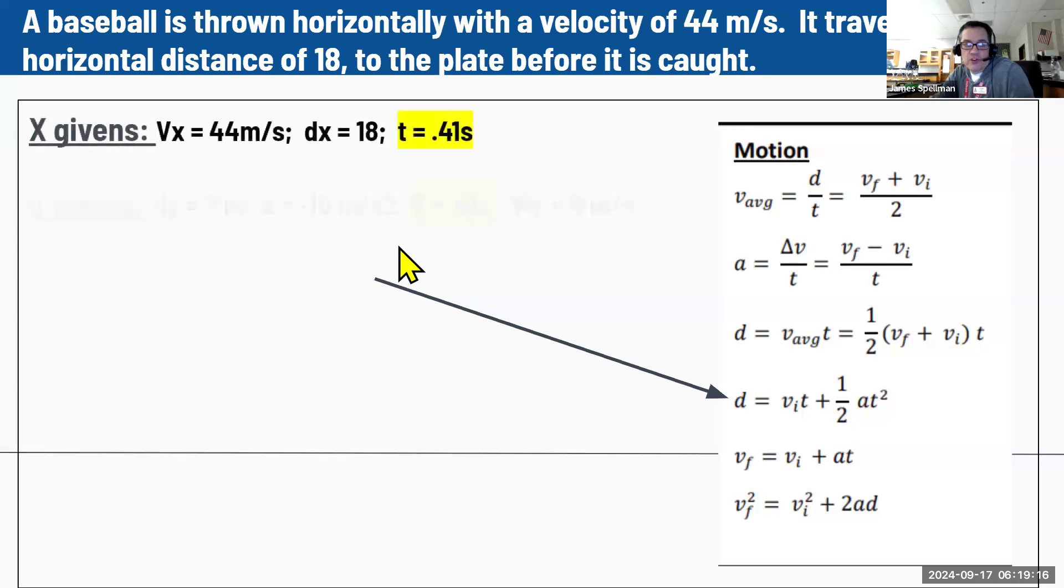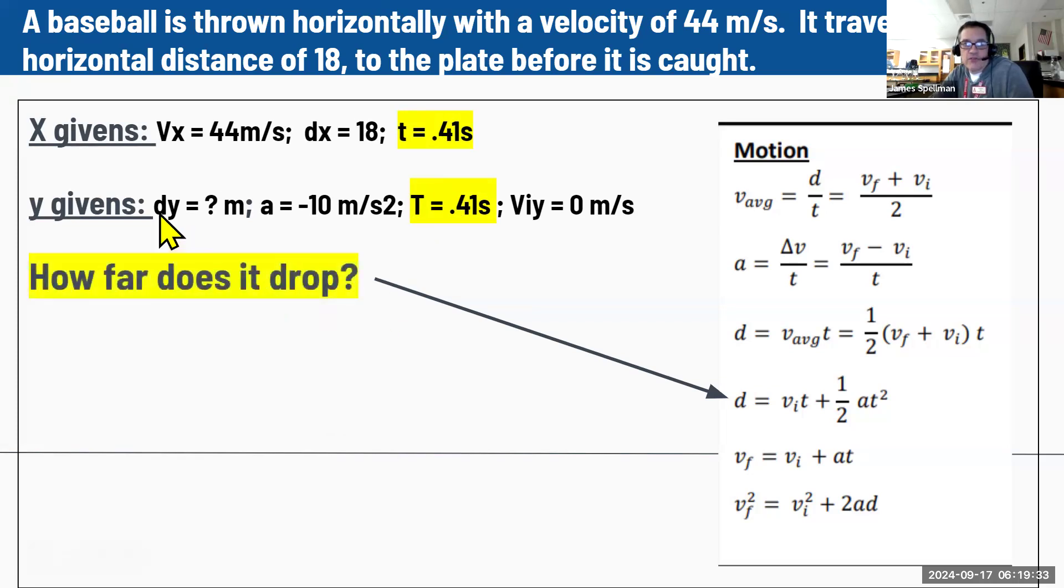And then what we can do is answer our second question, which is how far does it fall? That's our up and down distance. Since we solve for time in the X, that's also the same time as Y. Time is always going to be the same in both directions. There's not a separate time that's going to take for something to happen. So once we plug the time in, we can then answer how far does it drop, which is our distance in the Y direction. We're going to use this formula.